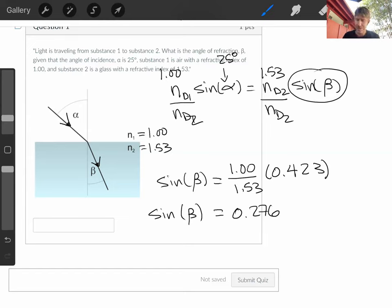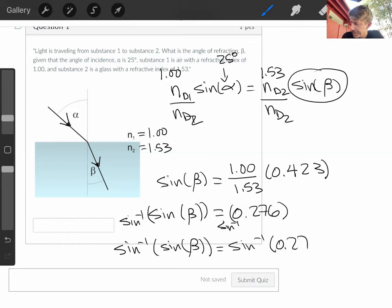So I have to do, on the calculator, see above where it says sine, it says sine to the minus 1. That's what we're going to do. Mathematically, if you do sine to the minus 1 of both sides—and that's not an exponent—sine minus 1 of sine beta equals sine minus 1 of 0.276.